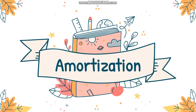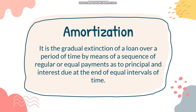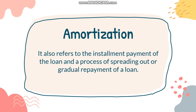For today's lesson, we will be discussing amortization. Amortization is a gradual extinction of a loan over a period of time by means of a sequence of regular or equal payments as the principal and interest due at the end of equal intervals of time. As we make regular payments, our loan will gradually reduce in value. We can also refer to it as the installment payment of a loan and the process of spreading out or gradual repayment of the loan.